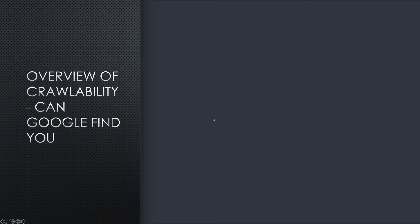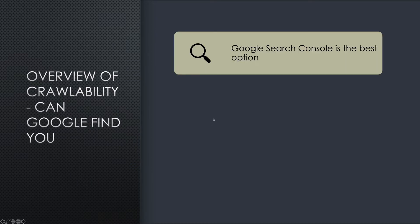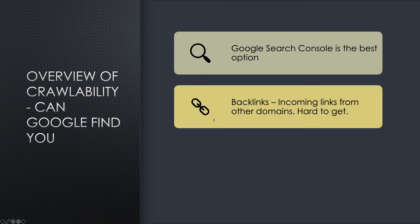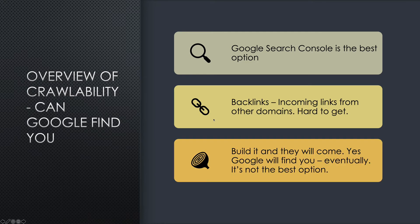A quick overview of crawlability. Google Search Console is the best option — it's an app from Google, and if you've got your property or your site added to it, you're guaranteed to be crawled. Backlinks: if you've got backlinks from other domains, they're hard to get, but that's the way you could be found because the bot goes around following links. Build it and they will come — yes, Google will find you eventually, but it's not the best option.